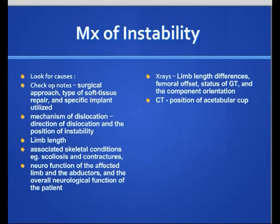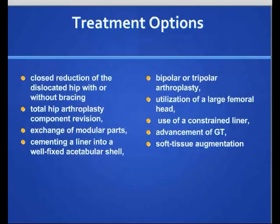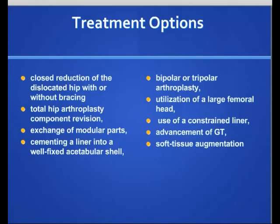Treatment options include closed reduction of the dislocated hip with or without bracing afterwards, revision of the total hip replacement if the cause is malalignment, and exchanging modular parts when there is a worn polyethylene liner. Another option with a worn liner is to cement the liner into the well-fixed acetabular shell. If alignment is not the problem, other options such as bipolar arthroplasty, a larger head, constrained liner, advancement of the greater trochanter, or soft tissue augmentation have been suggested, though these may not resolve the problem.